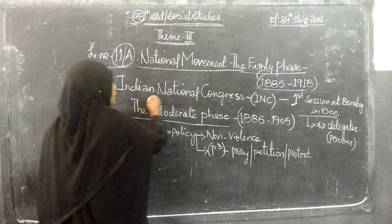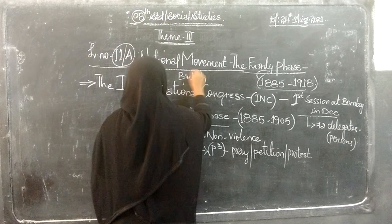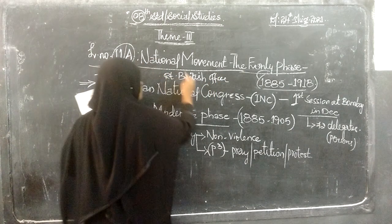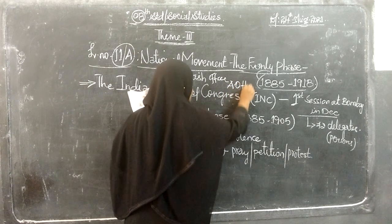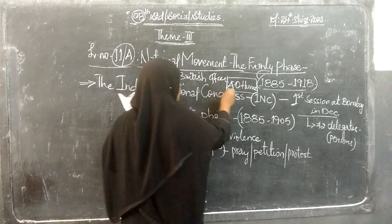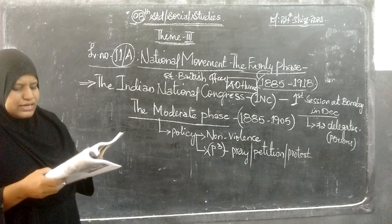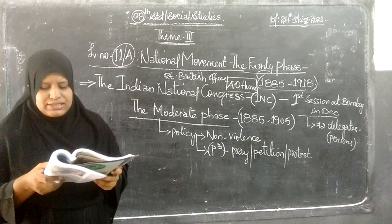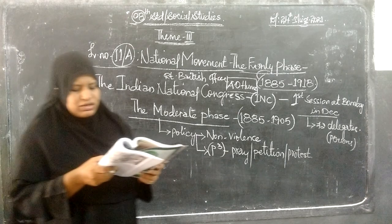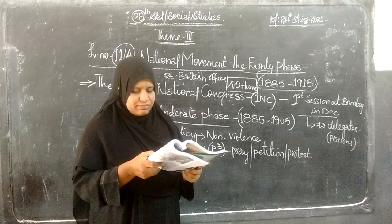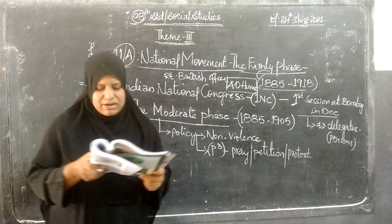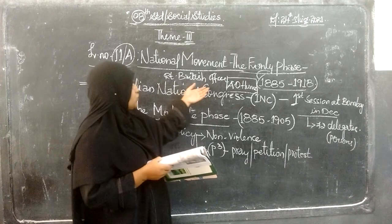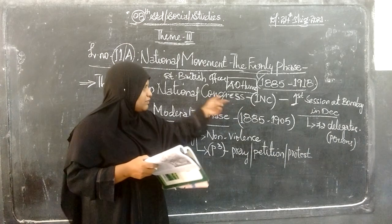Who helped form this Indian National Congress? A retired British officer — A.O. Hume — played an important role in the formation of the INC. The leaders of the Congress realized that the foremost task before them was to build national consciousness among the people of India and unite them.